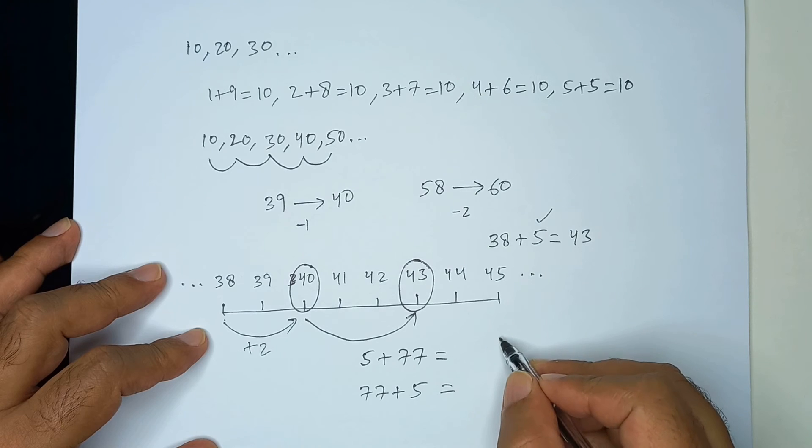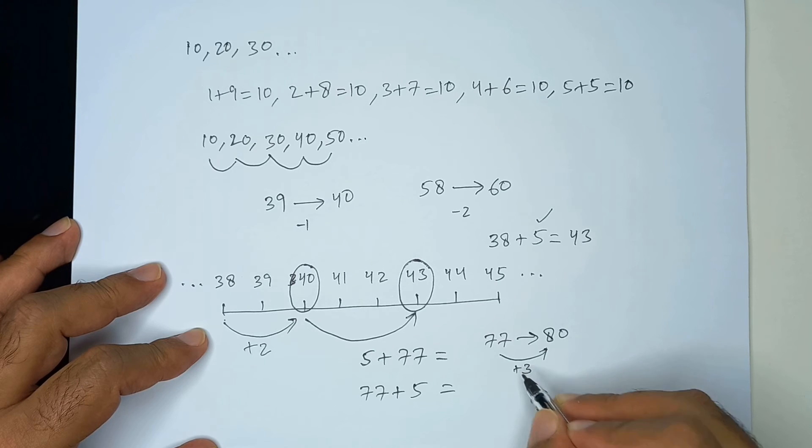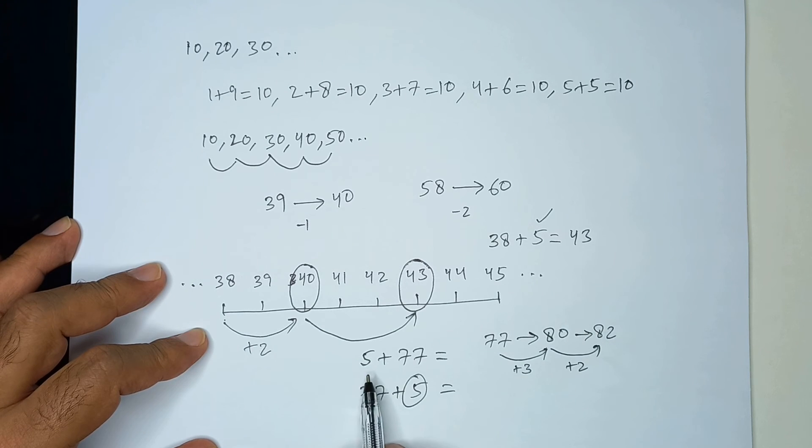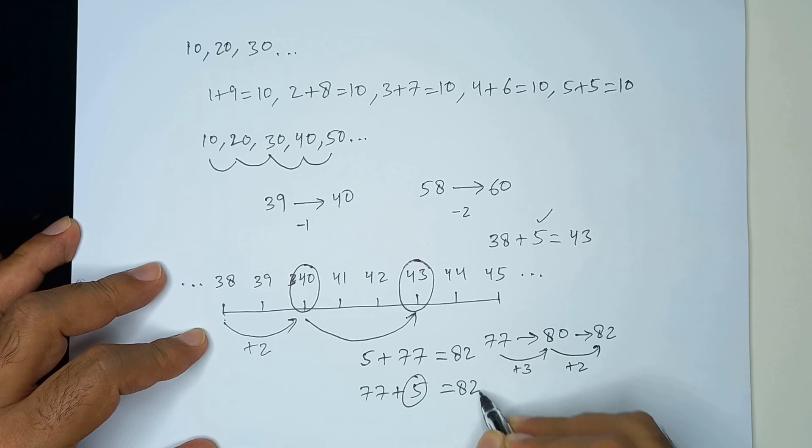So, in 77, when 77 is close to what? 80. So, when we jump to 80, we actually add 3 and this 3 we took out of this 5. So, we have 2 more to jump. So, we will reach at 82. So, 5 plus 77 is also 82 and 77 plus 5 is also 82.